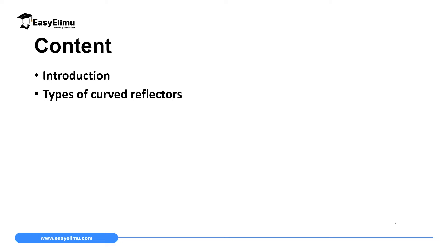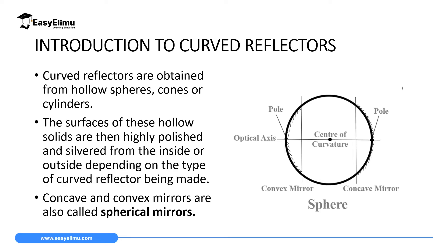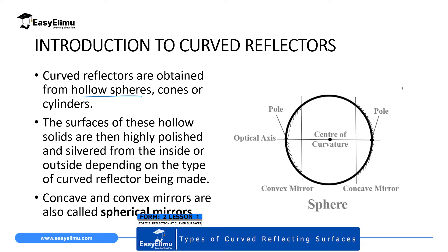In this lesson, we are going to discuss the introductory part of reflection at curved surfaces. Then later, we are going to look at the types of curved surfaces that we have. Curved mirrors, or curved reflectors, are obtained by cutting a part of a hollow sphere. You can also obtain them from cutting a part of a hollow cone.